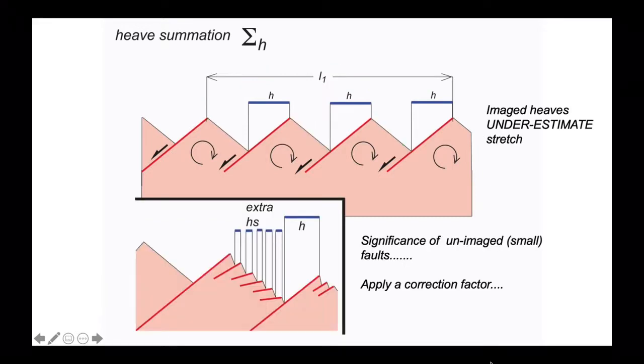In contrast, there's an issue about whether we can actually image the heaves properly in the first place. Are we seeing all the faults? So the question we want to ask is: what is the significance of un-imaged small faults? Commonly we might want to apply a correction factor.